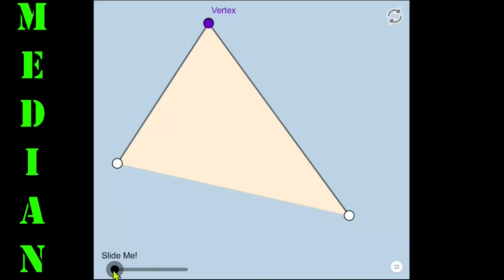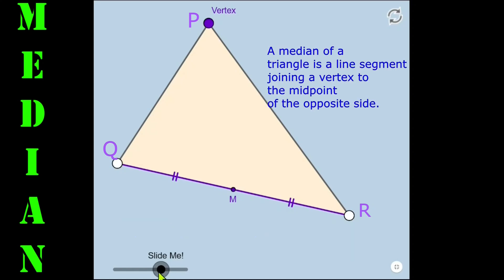To understand what medians are, let's draw a triangle PQR. Take a point M on the segment QR such that QM equals MR, which means M is the midpoint of segment QR. Also, QR is the side opposite to vertex P. We can define a median as the line segment joining a vertex of a triangle to the midpoint of the opposite side.